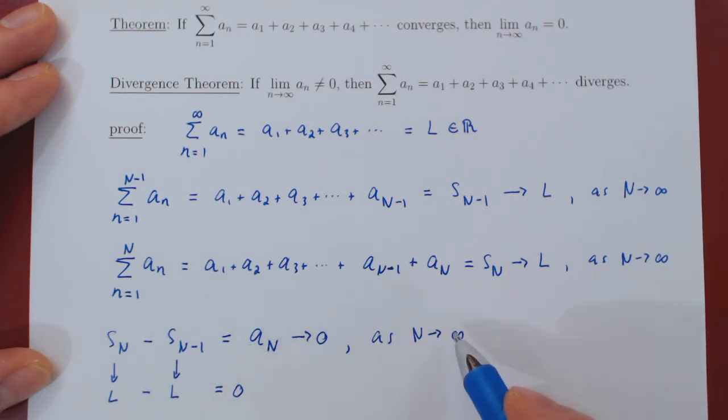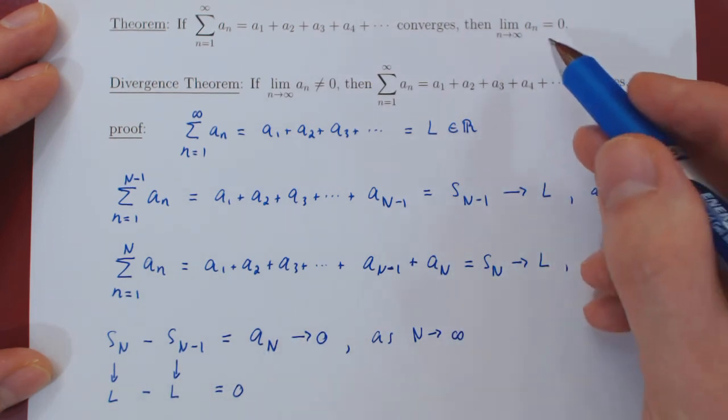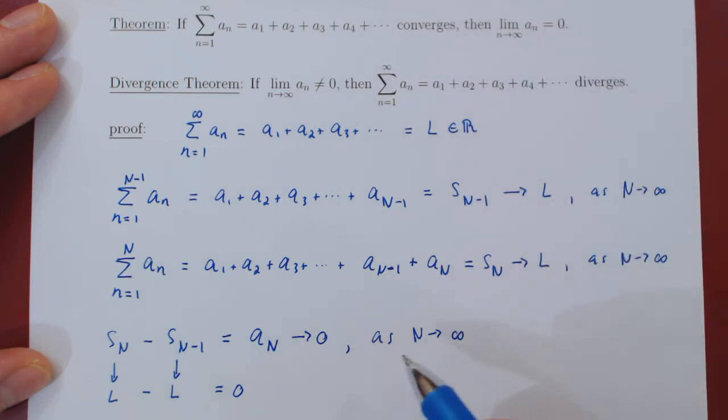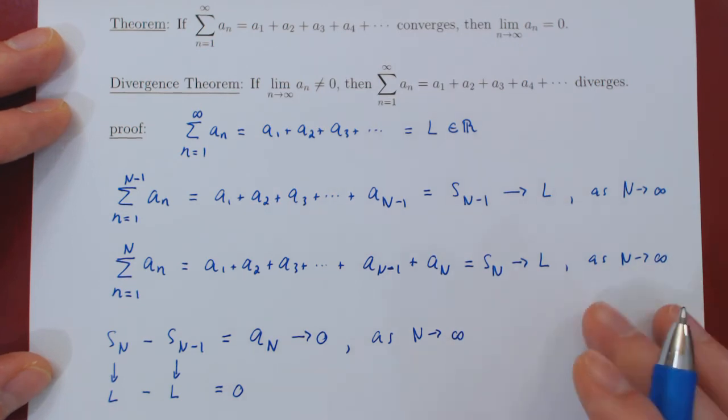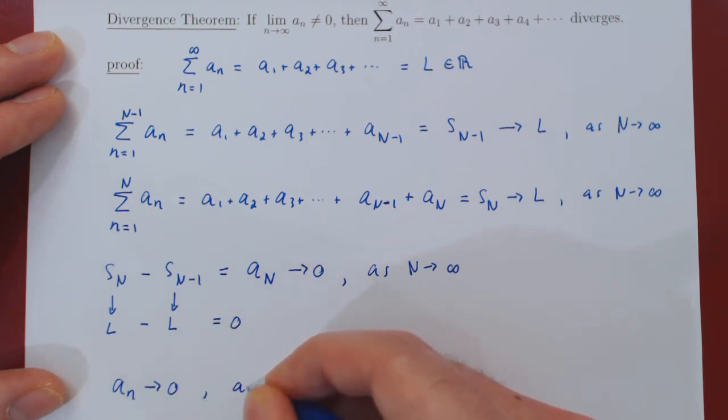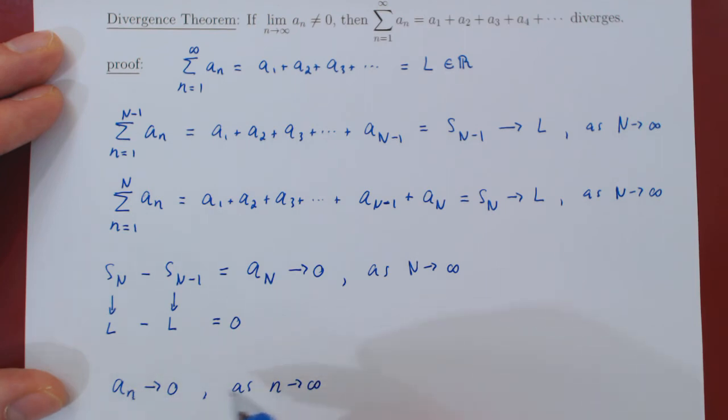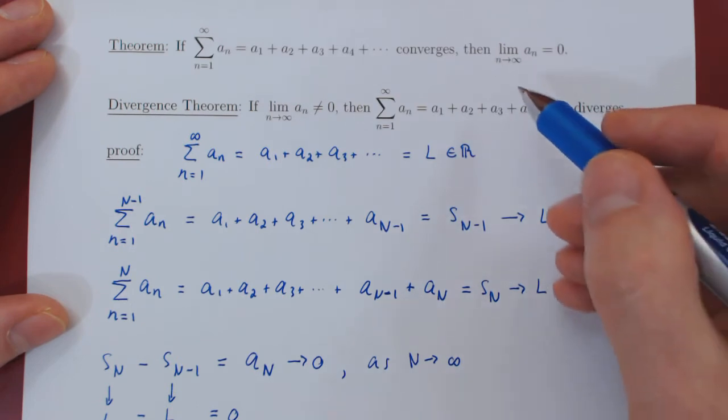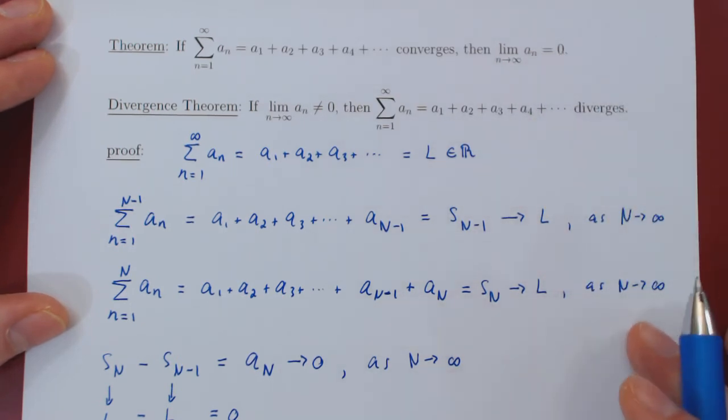But now of course we're done. The only difference between this statement and this one is that lowercase n has been replaced by uppercase N. So of course this is the same as saying that a_n goes to 0 as we are letting n tend to infinity, which is the same statement but written differently as saying as we let n tend to infinity, a_n converges to 0.